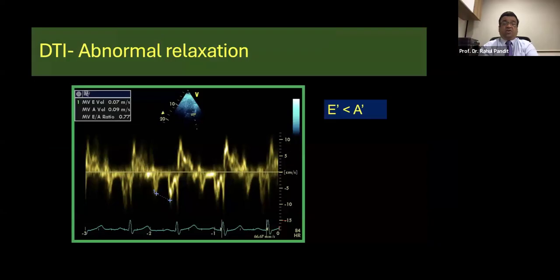So if I was to put my tissue Doppler imaging and I get a E dash and A dash which is a mirror image of an E and A wave and I get those images, I am now confirming that my E reversal was there plus E dash and A dash reversal also seen on my tissue Doppler imaging.